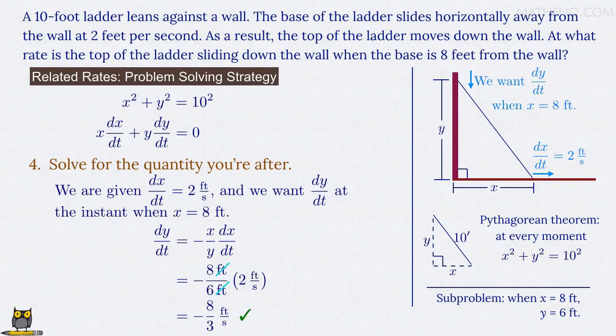You might wonder why the value is negative. The reason is that y decreases as the ladder slides down the wall, and so dy/dt has a negative value as y becomes smaller as time passes. Indeed, something would be wrong if we didn't get a negative value for dy/dt for that reason.